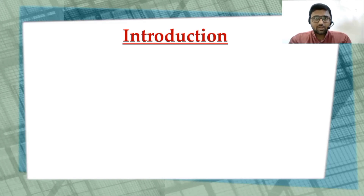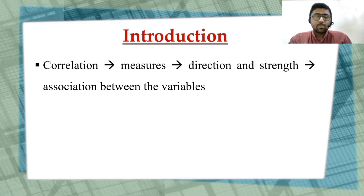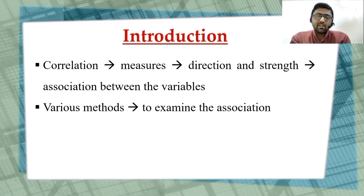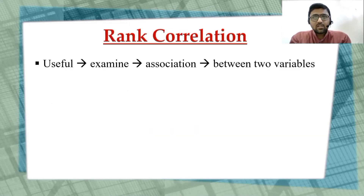Let's begin with the introduction. Correlation analysis in general is used to examine the association of variables — the strength of the association and the direction of the association — so whether two or more variables are positively or negatively associated, and whether the association is strong or weak. Various methods exist to calculate the correlation coefficient, and rank correlation is one of them.